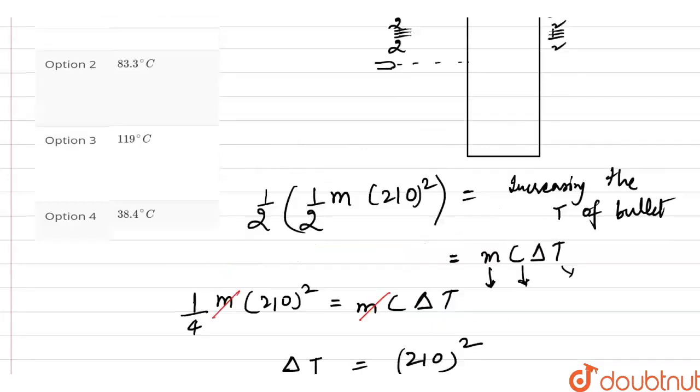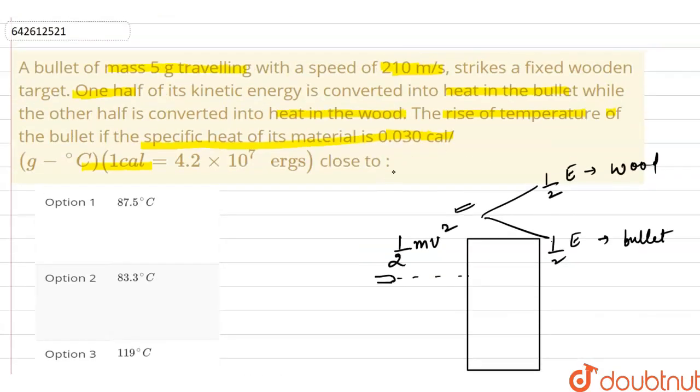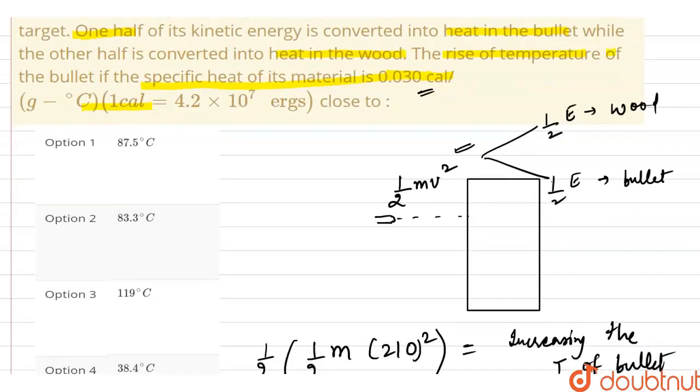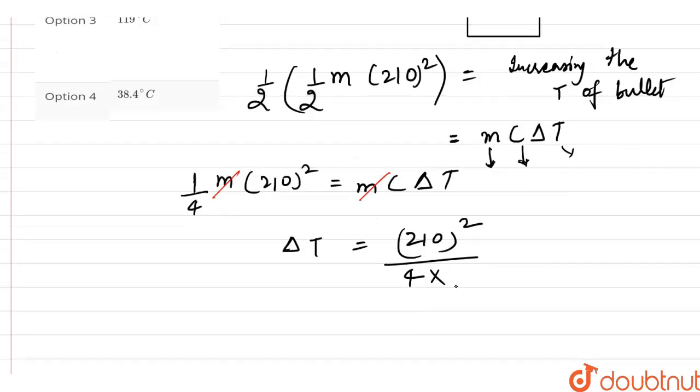0.030 calorie. Calorie means one calorie is 4.2 joule, so this is into 4.2 per gram per degree celsius. Per gram means 10 to the power minus 3 kg.